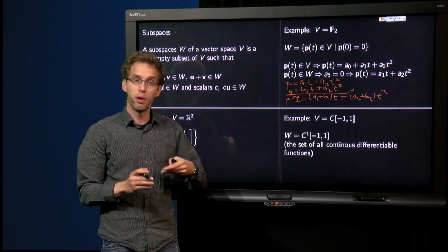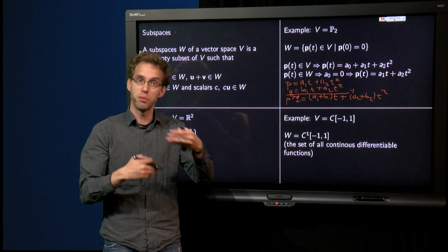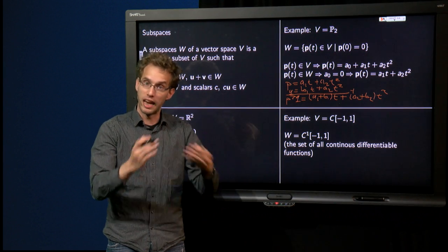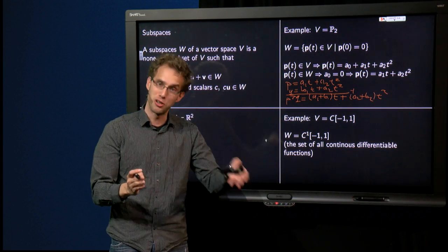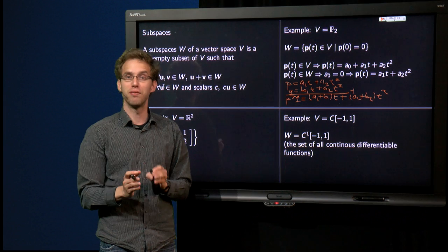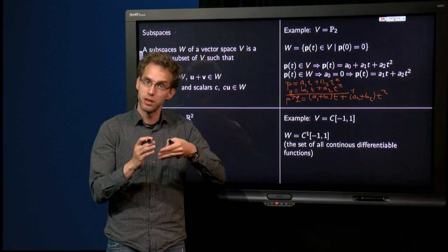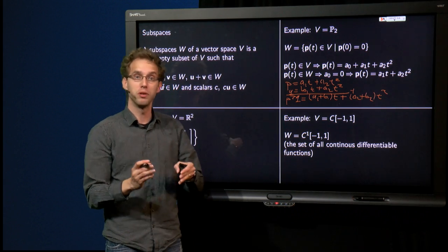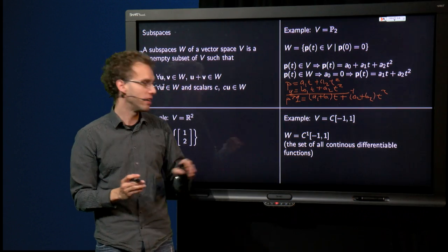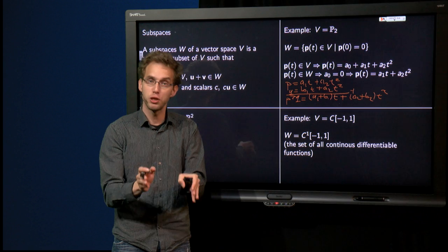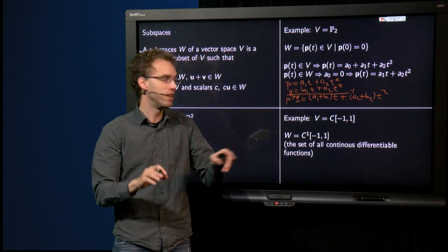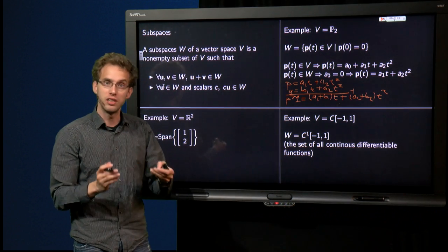Let's see about the closure. Well, if you take the sum of two differentiable functions, the result is again differentiable, as you learned in calculus, and if you have a differentiable function and you multiply it with a scalar, the end result is also differentiable, so that property is also satisfied, which means that the set of differentiable functions is also a subspace of the set of continuous functions.